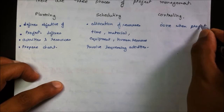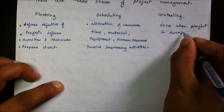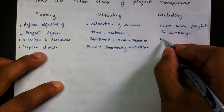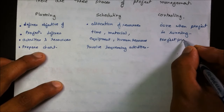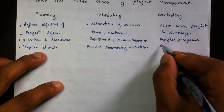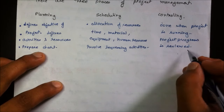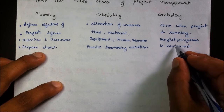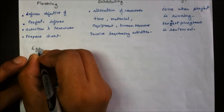Controlling is done when the project is running. It is used to identify critical and lagging-behind activities. It reviews the current project progress and gives extra attention to critical activities so that the project may be completed on time.